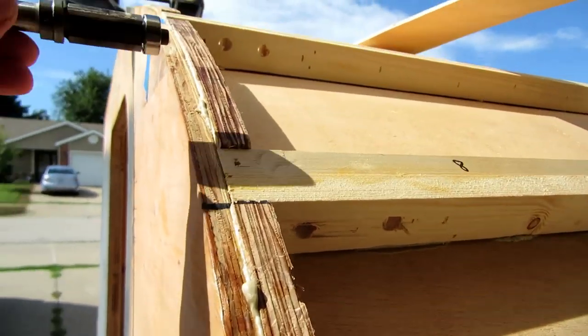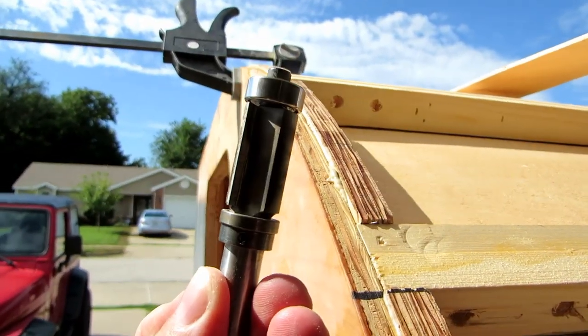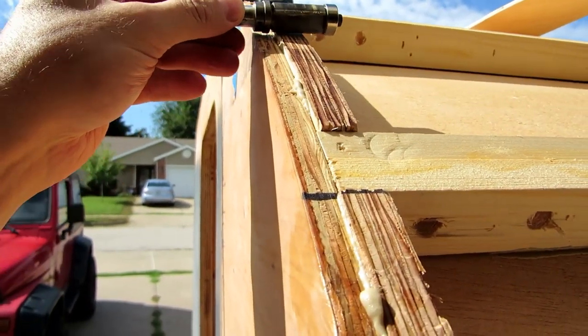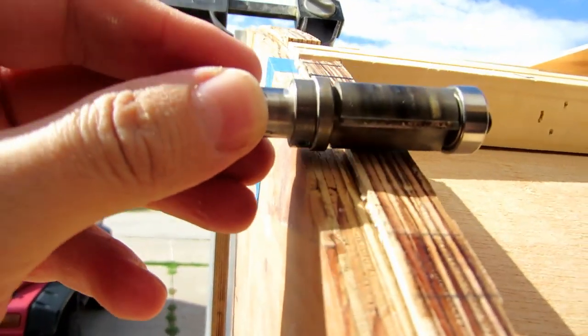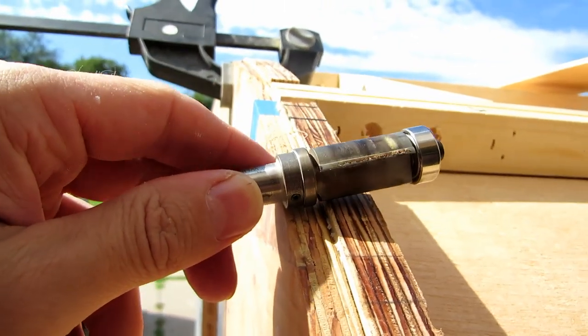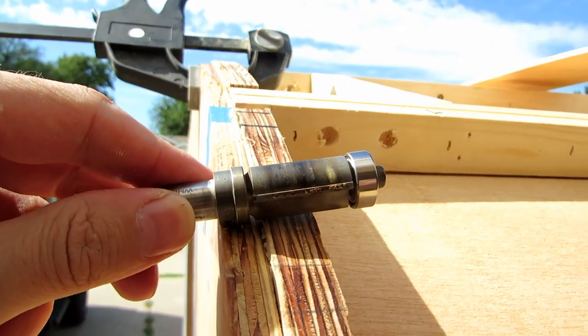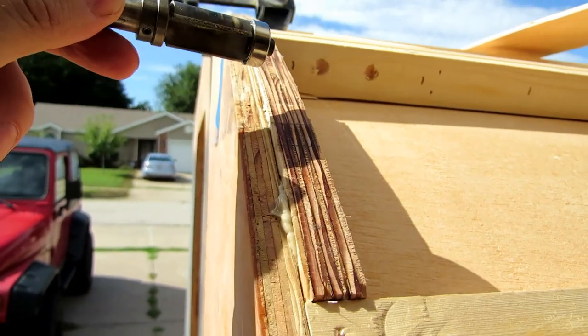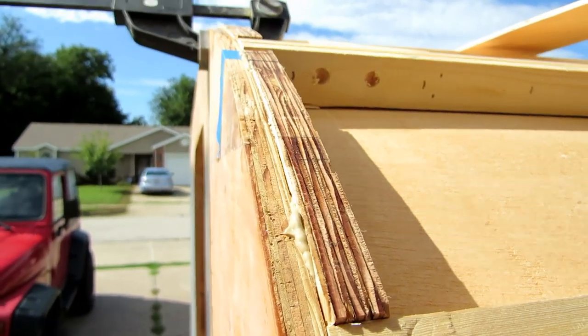I forgot to mention how I'm going to fix that. So I'm going to take my router bearing bit. I'm going to make it to where this bearing here sits on this outer exterior wall. Then that will cut all this flush. So that's how I'm going to fix these being an eighth of an inch too high.